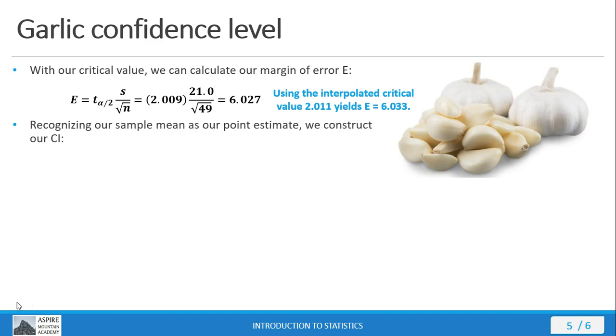Our sample mean is our point estimate. That's going to be the center of our confidence interval. We have everything we need to construct our CI. Here's the general form. We take 0.4, which is our sample mean, and we're going to add and subtract 6.027, which is our margin of error. Out comes a confidence interval of negative 5.627 to 6.427.